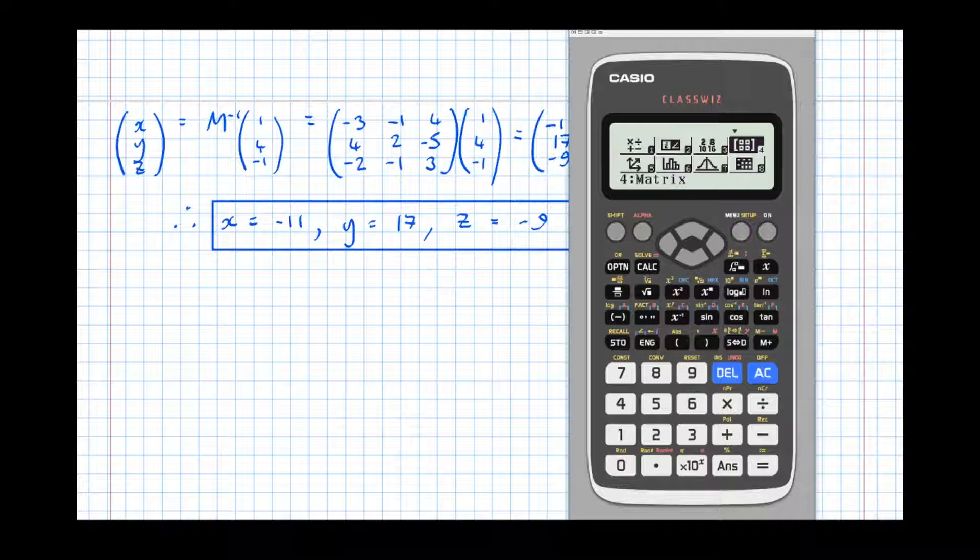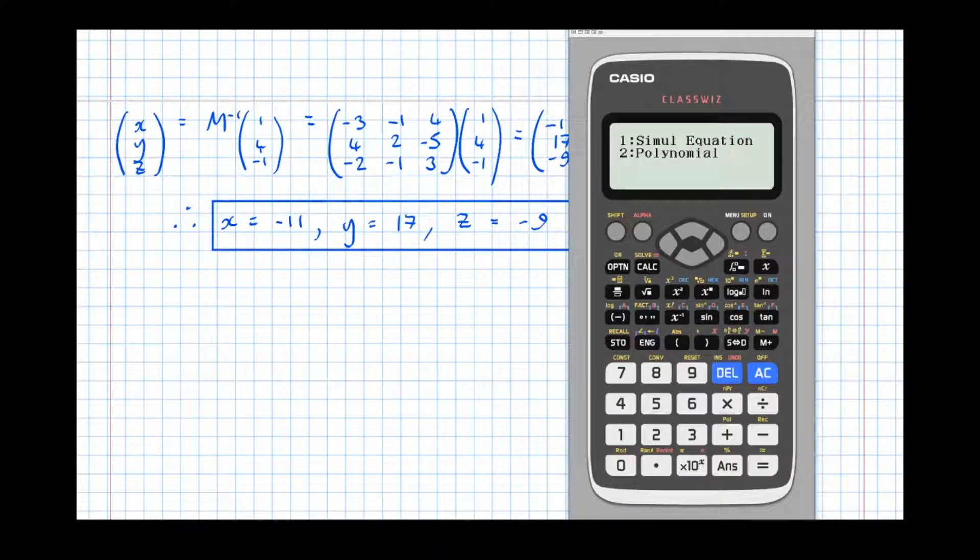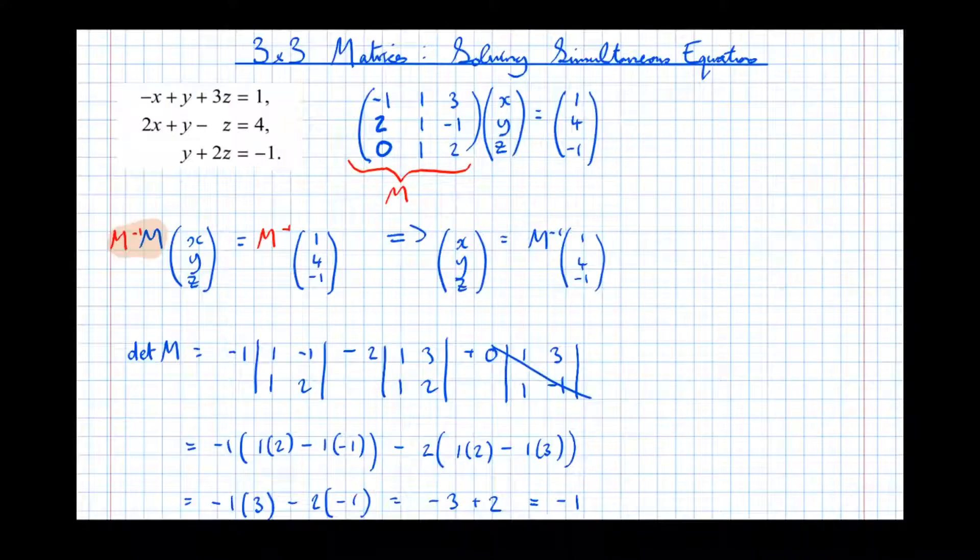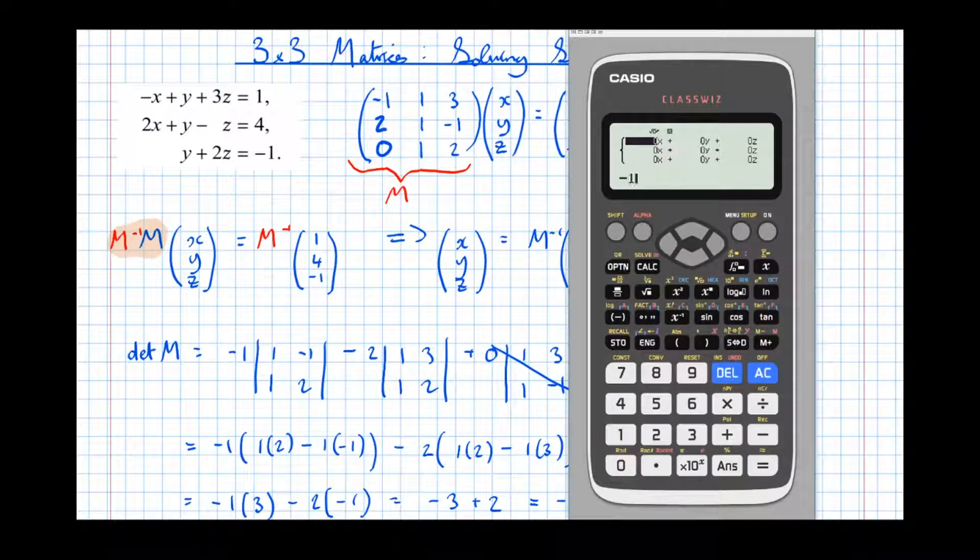However, there is a way of checking this answer using the simultaneous equation solver on your calculator. So if you go to equation solving mode and select option 1, simultaneous equation, and there were three unknowns. So scroll back up to the original question. So we saw the answer was -1x plus 1y plus 3z equals 1. 2x plus 1y minus 1z is 4, and 0x plus 1y plus 2z equals -1.